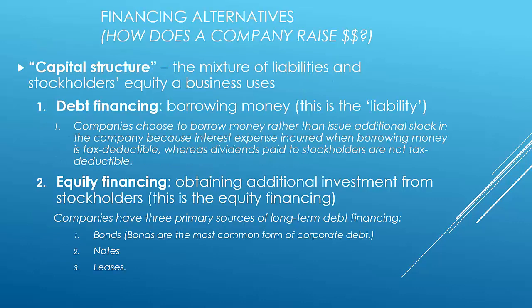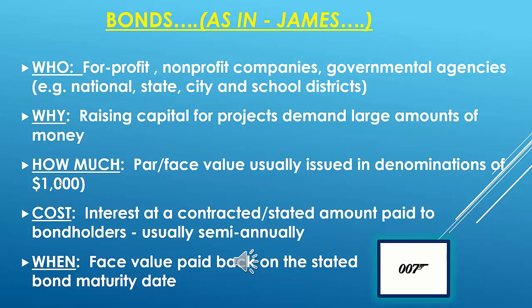How a company finances itself is called the capital structure. A company can take on liabilities — debt financing — or issue stock — equity financing. Each has its pluses and minuses, and those are the basic ways a company will finance itself.